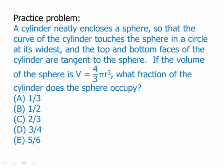Okay. A cylinder neatly encloses a sphere so that the curve of the cylinder touches the sphere in a circle at its widest, and the top and bottom faces of the cylinder are tangent to the sphere. If the volume of the cylinder is 4 thirds pi r squared, what fraction of the cylinder does the sphere occupy?